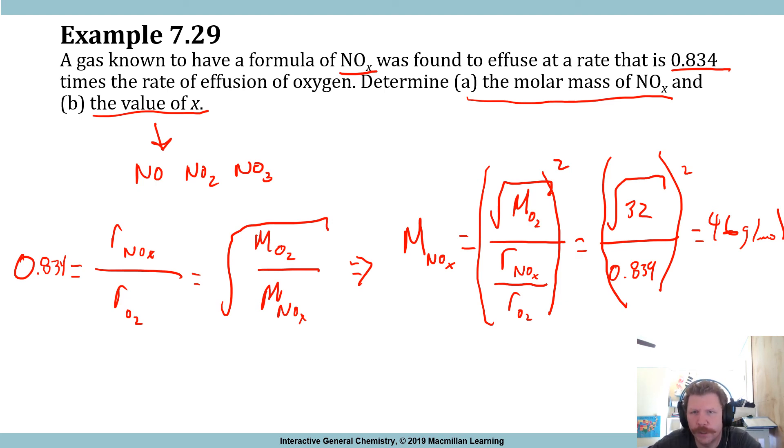Now, the question is, so that's all for part A. Now, part B is, is it NO, NO2, NO3? Well, you have 46, you subtract the molar mass of nitrogen, which is 14, and you're left with 32. Oxygen is 16 grams per mole each, so 32 divided by 16 equals 2, so that means that we are talking about NO2.